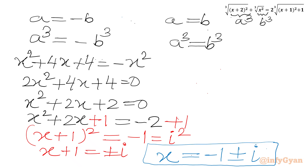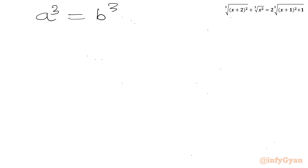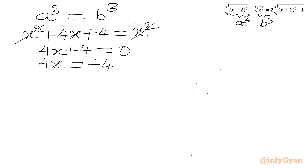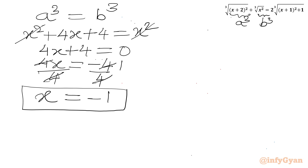Now I will solve the second equation: a³ = b³. Here a³ was x² + 4x + 4 and b³ was x². We can cancel x² on both sides, leaving 4x + 4 = 0, so 4x = -4, and dividing by 4 gives x = -1. So we have one real solution x = -1 and two complex solutions x = -1 ± i.